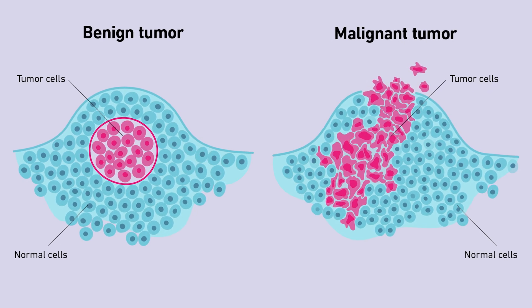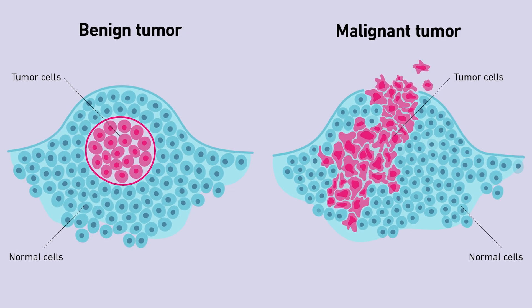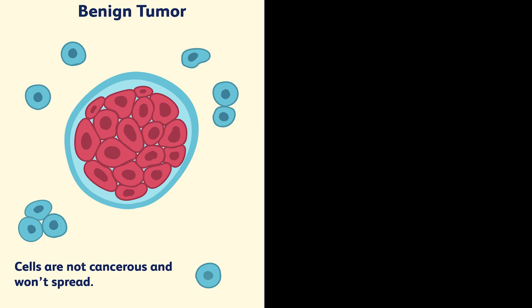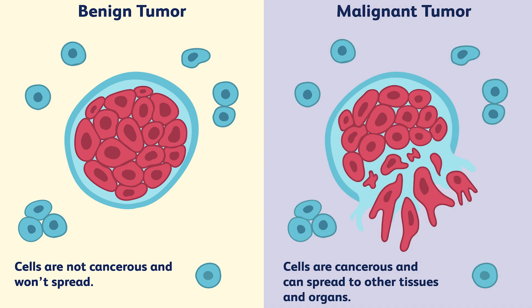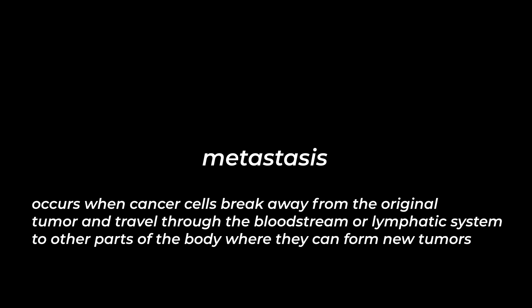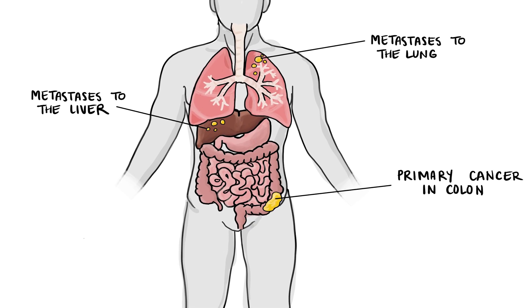As these abnormal cells continue to grow, they form tumors. There are two main types of tumors: benign and malignant. Benign tumors are non-cancerous and do not spread to other parts of the body. Malignant tumors, on the other hand, are cancerous and can invade nearby tissues and spread to other parts of the body — a process called metastasis. Metastasis occurs when cancer cells break away from the original tumor and travel through the bloodstream or lymphatic system to other areas of the body, where they can form new tumors.